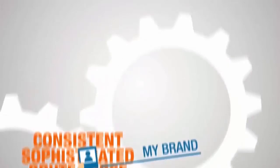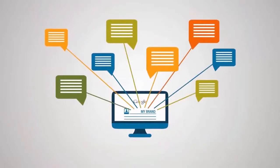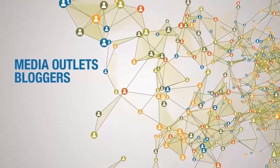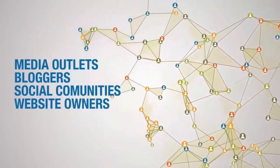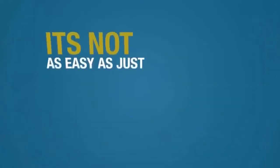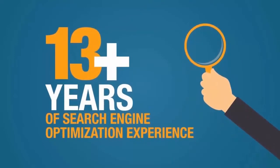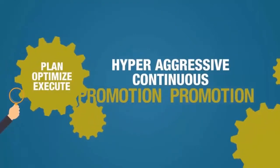In order to position any article, video, or image at the top of the search results, you have to manually build links, create social citations, and mentions from other trusted sites on the web. To do this, we utilize our established relationships with hundreds of media outlets, thousands of bloggers, and dozens of social communities and other website owners to promote your content. Without that type of trust building, it would be rather difficult to convince a search engine like Google that a particular new article or video is important. We use our 13-plus years of search engine optimization experience to plan, optimize, and execute this strategy properly, and follow it up with hyper-aggressive, continuous promotion.